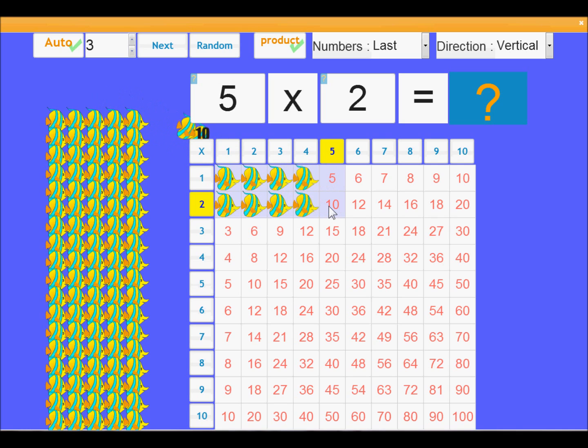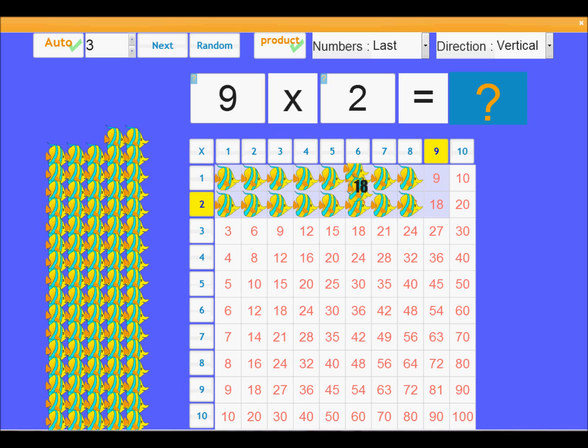So it's all happening a bit fast, but now you can see as the new fish arrives to make the product, it's always matching the number of the red product number behind. It's obviously crucial that the children understand the difference between the black counting numbers and the red product numbers.